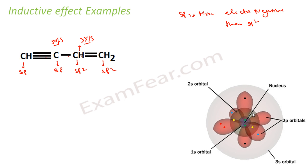Carbon 2 is sp (50% s character) and carbon 3 is sp2 (33% s character). Since sp is more electronegative than sp2, carbon 2 will try to attract electrons toward itself. So carbon 2 will get a slightly negative charge, carbon 3 will get a slightly positive charge, and this effect diminishes further along the chain. This is the inductive effect in this molecule.